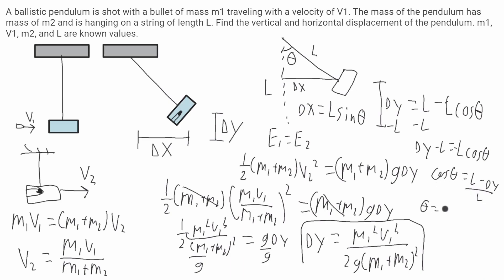So theta will be equal to cosine inverse of L minus delta y over L. Now I can go over here. We said that delta x is equal to L sine of theta, so it'll be L times sine.